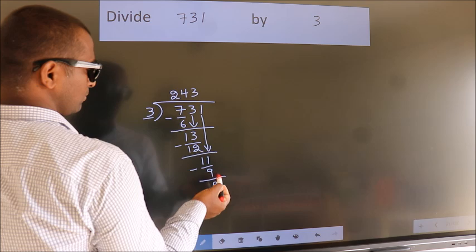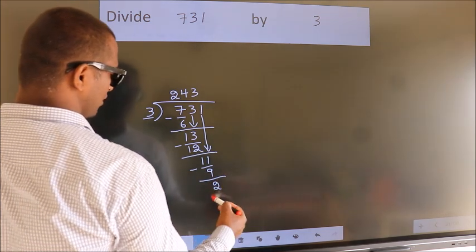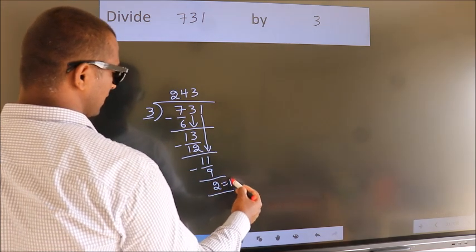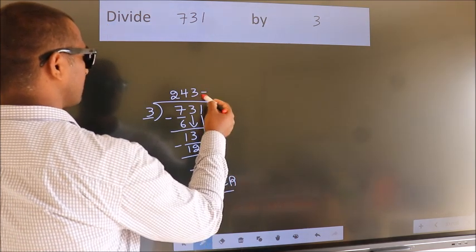No more numbers to bring it down. So we stop here. This is our remainder. This is our quotient.